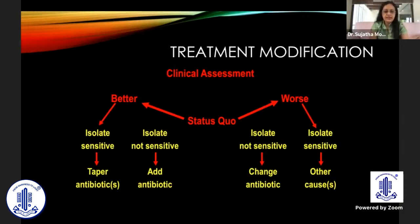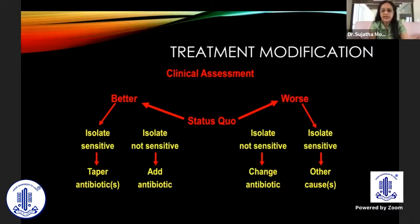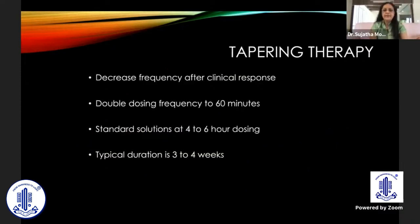If the patient is getting better and the isolate is sensitive, start tapering the antibiotic. If the isolate is not sensitive, add a fortified antibiotic. If the condition worsens and the isolate is not sensitive, change the antibiotic. If the isolate is sensitive but worsening, look for other co-morbidities like diabetes. Once you see a good clinical response, reduce dosing to hourly; when using two antibiotics, use them alternate hours. After one week, reduce to every four to six hours.